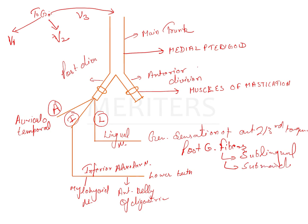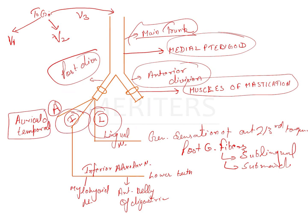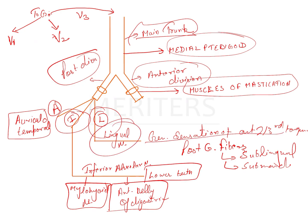So this is how we can remember V3, that is your mandibular nerve and its branches. The anterior division gives rise to the muscles of mastication except the medial pterygoid, which comes from the main trunk. The posterior division has the auriculotemporal, inferior alveolar, and lingual nerve. The inferior alveolar further gives rise to the mylohyoid nerve, the anterior belly of the digastric, and supplies the lower teeth. The lingual nerve supplies the general sensation of the anterior two-thirds of the tongue and is part of the posterior division.